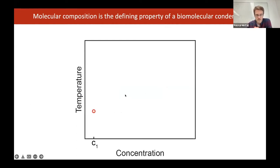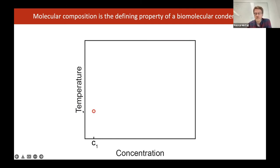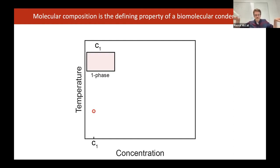Imagine a test tube with exactly two types of molecules: a solvent like water and a protein polymer, at concentration C1 and some temperature. This gives a point on the phase diagram in the concentration-temperature plane. Looking under a microscope, this sample would appear homogeneous — a single phase. At a higher concentration, you see droplets that can fuse with one another and get larger — a demixed system with two different phases.